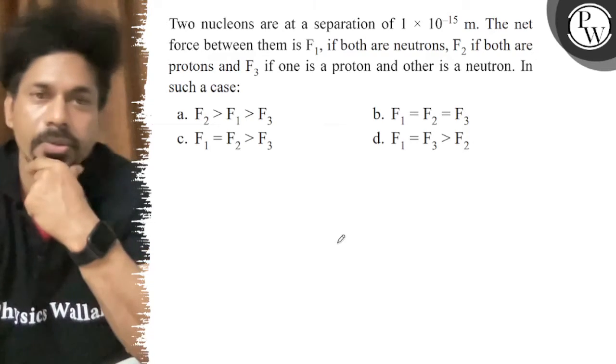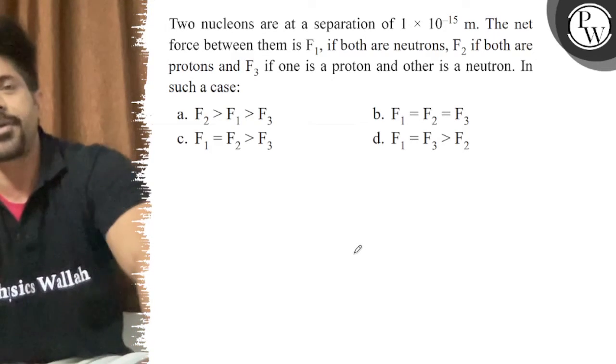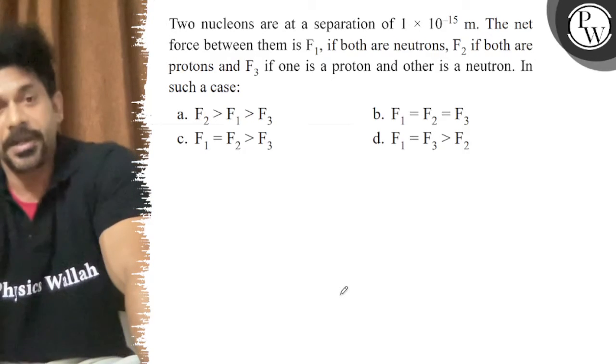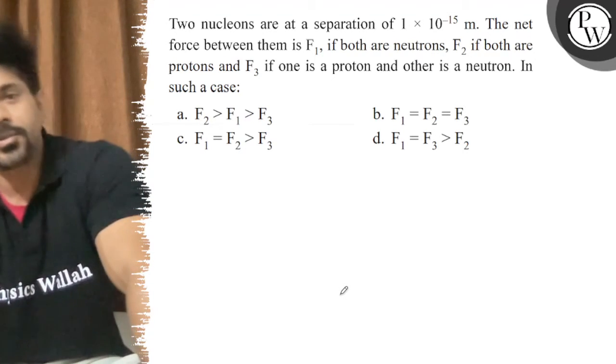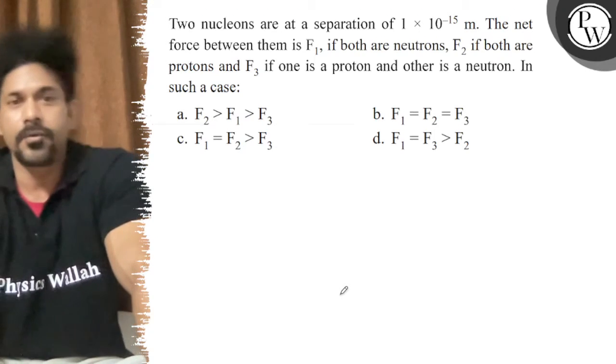Hello, let's see the question. Two nucleons are at a separation of 1 × 10^-15 m. The net force between them is F1 if both are neutrons, F2 if both are protons, and F3 if one is a proton and one is a neutron.